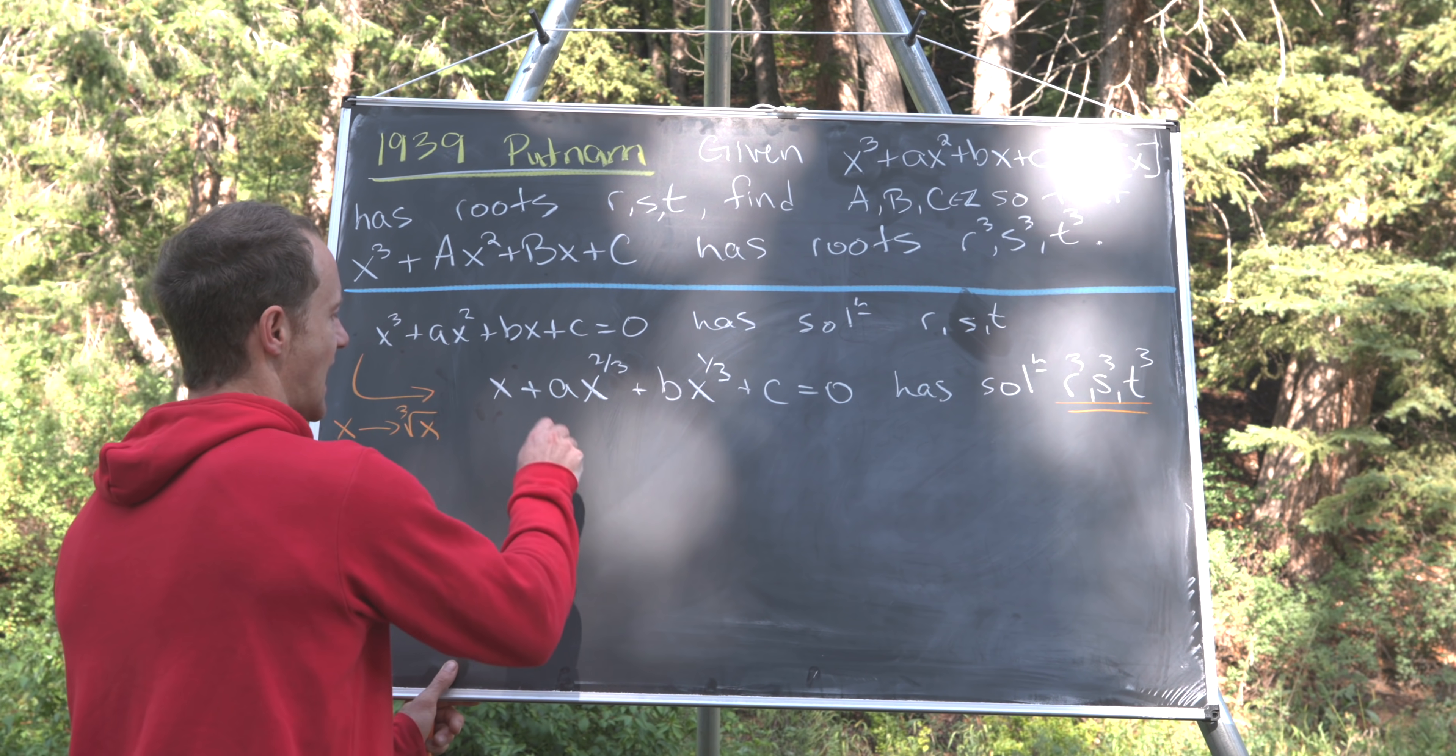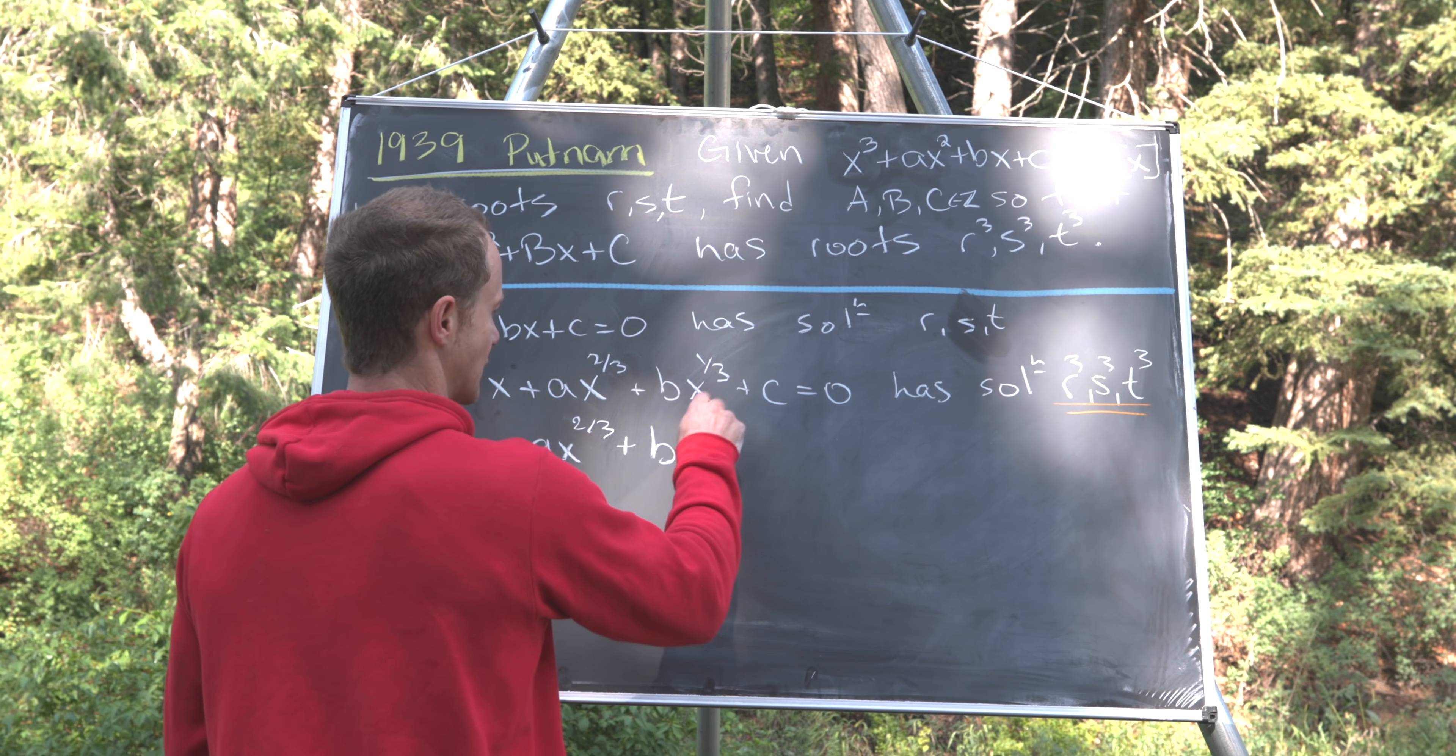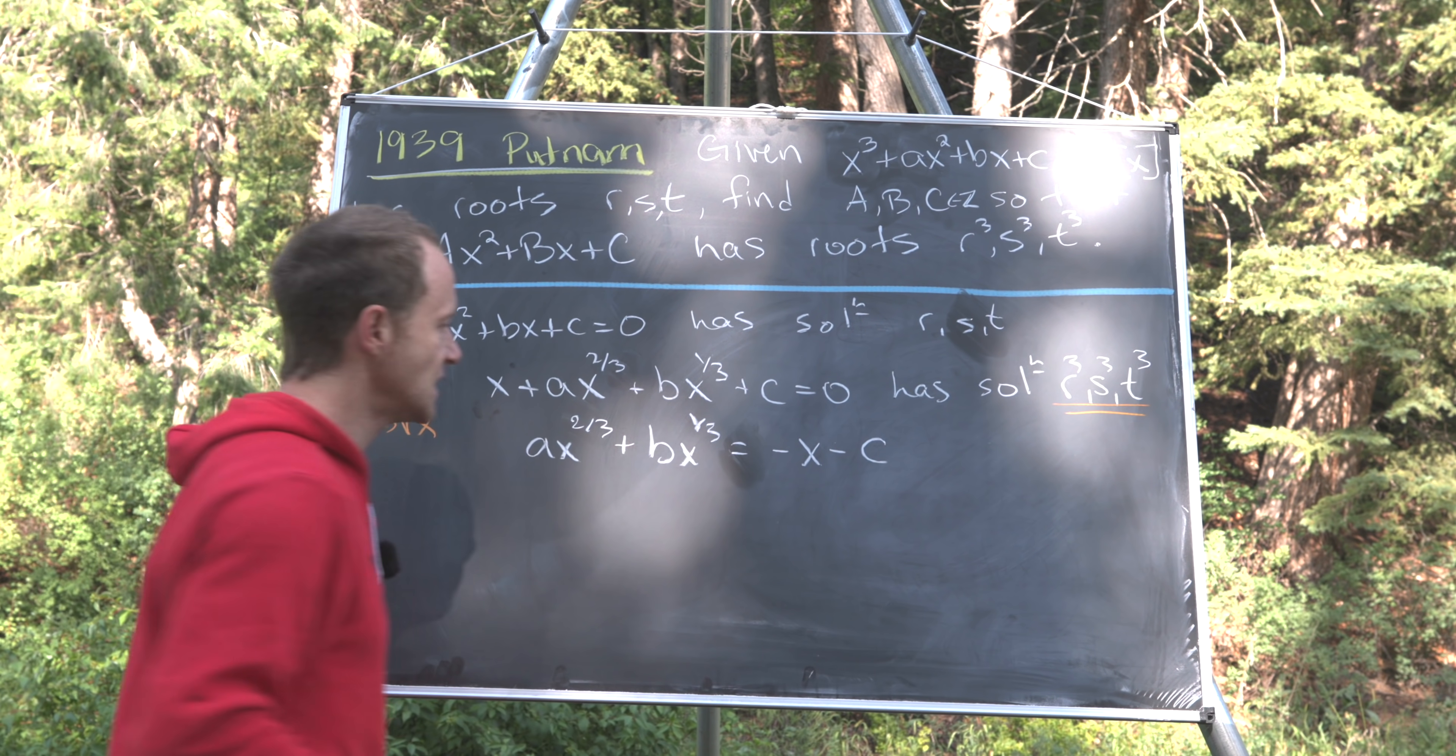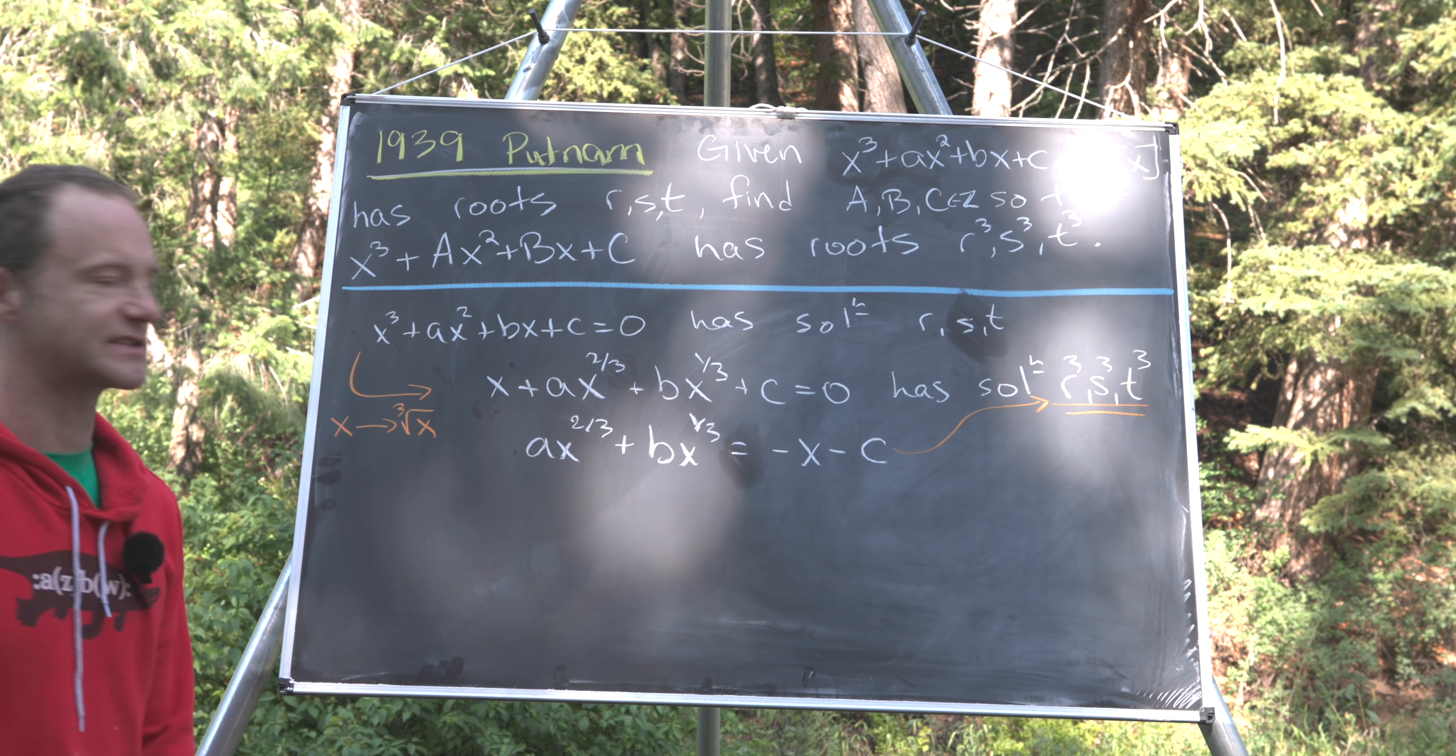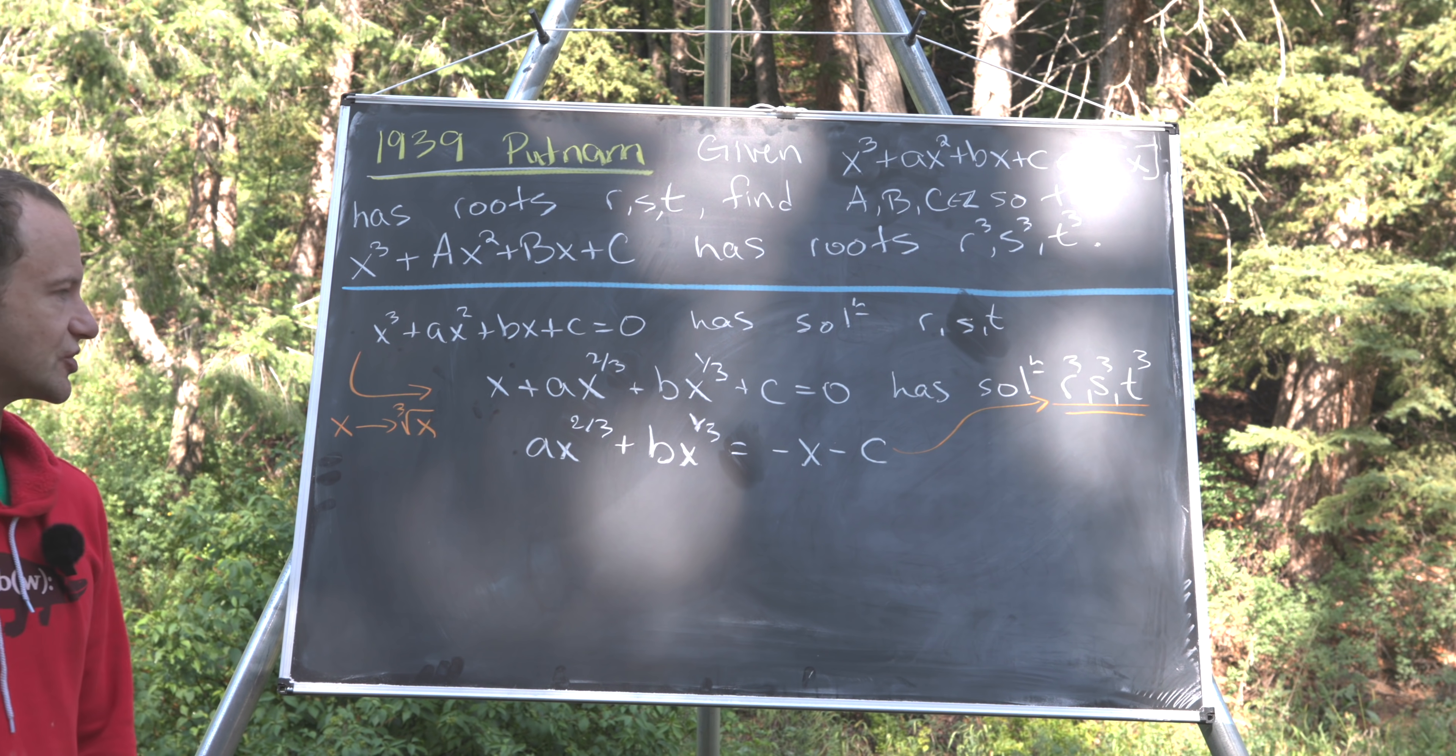So maybe we'll move them to the other side of the equation. So let's do that. We'll have ax^(2/3) + bx^(1/3) = -x - c. So that means this equation also has solutions given by r³, s³, t³, because it's a simple reorganization of our second equation.